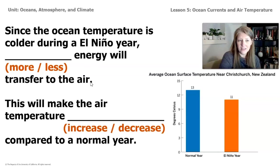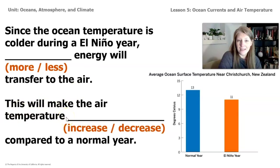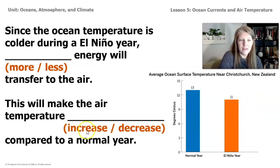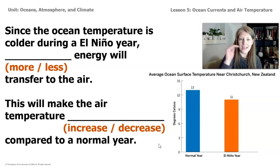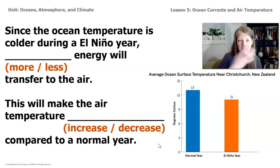If less energy is transferred during an El Niño year, this will make the air temperature decrease compared to a normal year. We already knew the air temperature was colder during El Niño, and we already knew the ocean temperature was colder. But now from all the evidence collected today, you can explain it: because the ocean temperature is colder, some energy from the air will transfer to that colder ocean current, making the air temperature drop down as well.